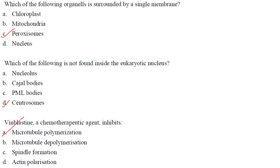Which of the following organelle is surrounded by a single membrane? It is peroxisomes, answer is option C. All the other options are double membranes. Which of the following is not found inside the eukaryotic nucleus? Centrosomes are not found in the eukaryotic nucleus. Centrosomes are located at the center of the cell in tight association with the nuclear envelope. Then vinblastin, a chemotherapeutic agent, inhibits microtubule polymerization. Answer is option A. It is used as an anti-cancer drug.